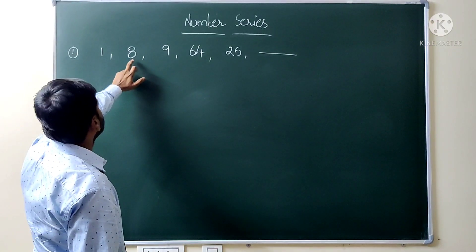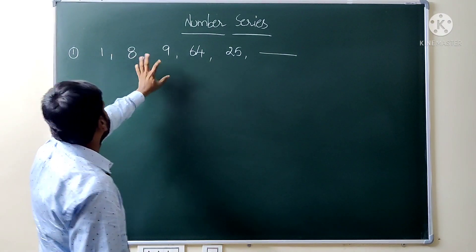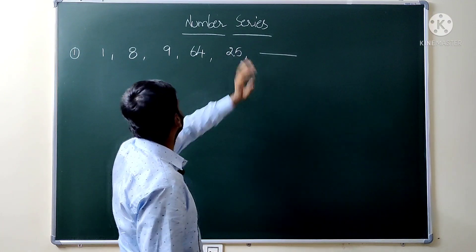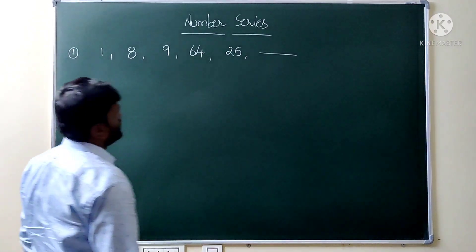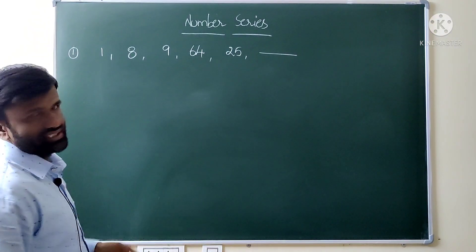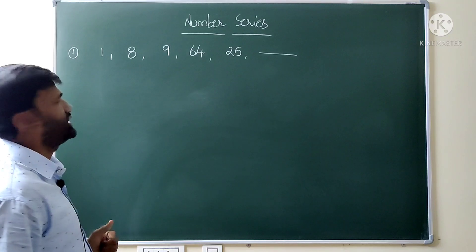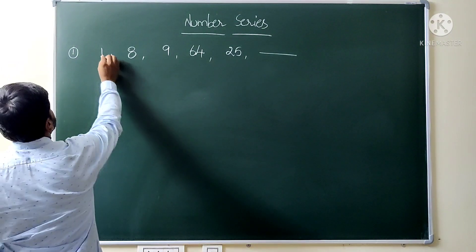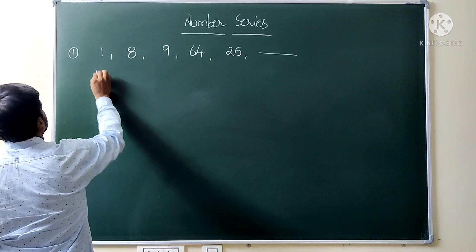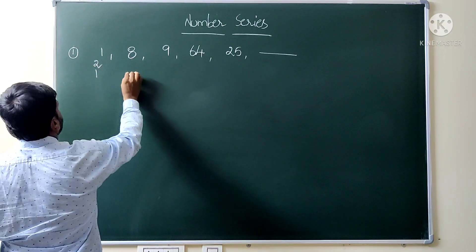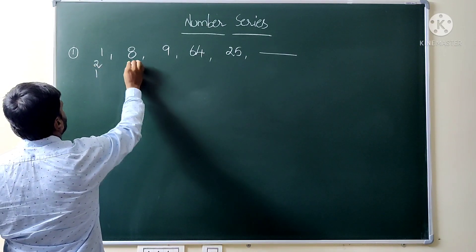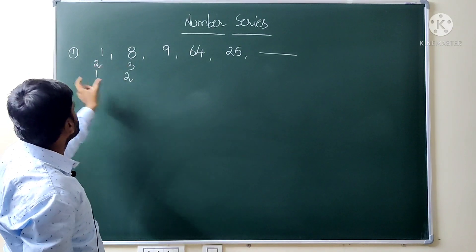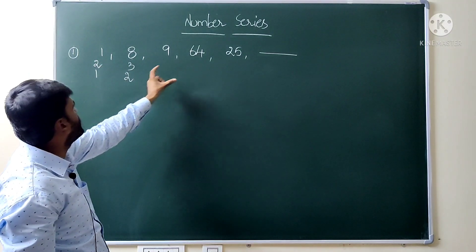From 1 to 8 there is a gap. The pattern is: 1 squared, 2 cubed — so the series follows consecutive squares and cubes. So we have 1 squared, then 8 which is 2 cubed, then 9 which is 3 squared.